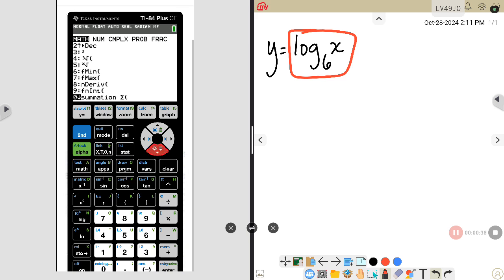You will see it says log base. Hit enter there and that gives you the log and the correct places to put in the 6 and the x.